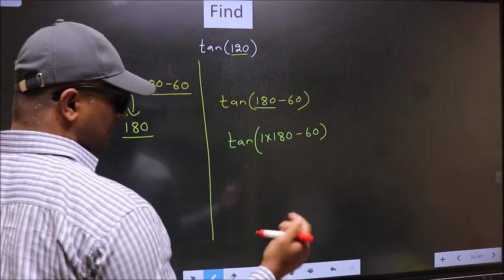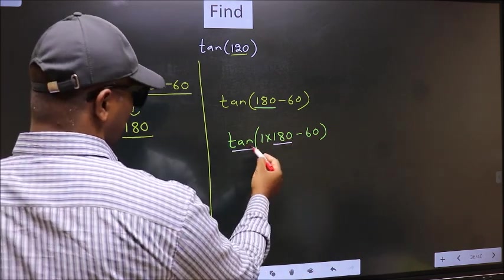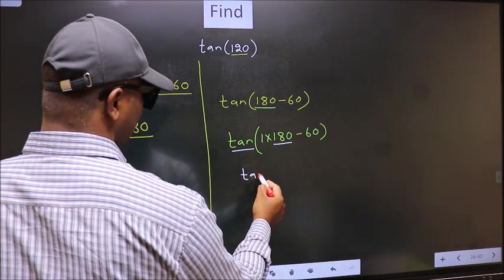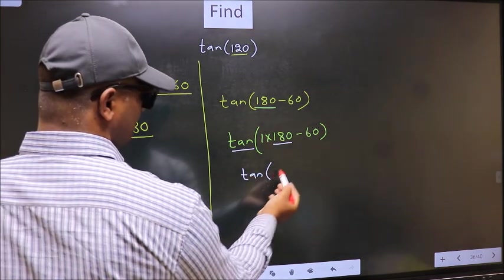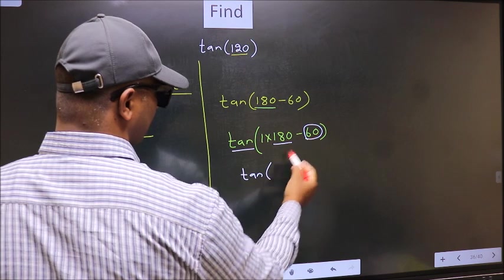Next, here we have 180. So tan is not going to change. It will remain tan. And inside, we get this angle 60.